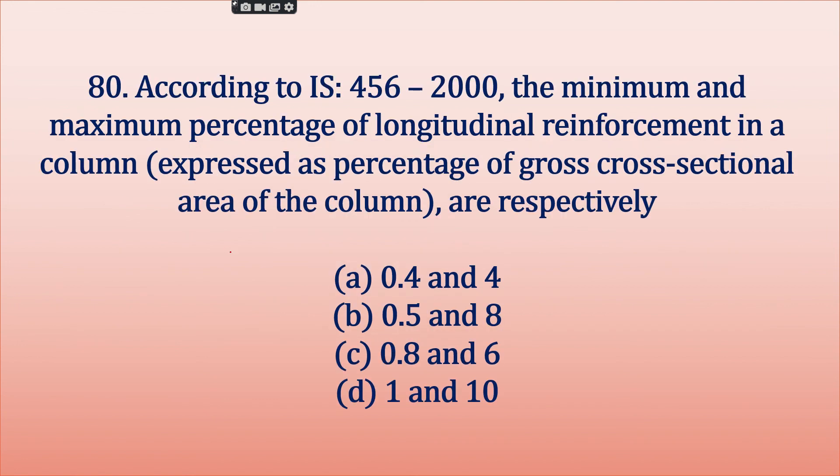Last question: According to IS 456, minimum and maximum percentage of longitudinal reinforcement in a column. So it's 0.8 and 6. Minimum is 0.8% of total column area, that's 0.8% of b into d. And max is 6%, but here we use only up to 4%.